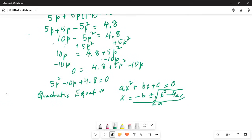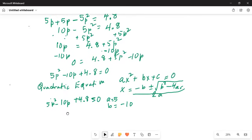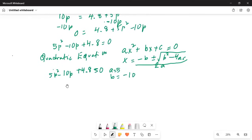Quadratic equation a x square plus b x plus c equal to 0. My x is minus b plus minus square root of b square minus 4ac by 2a. Notice here the coefficient of p square. Our equation is actually 5p square minus 10p plus 4.8 is equal to 0. So my a is equal to 5, my b is equal to minus 10, and c is equal to 4.8.